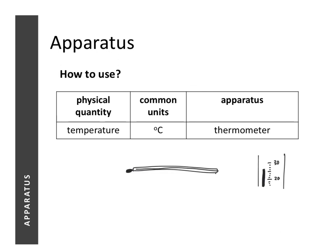To measure temperature, we use a thermometer. If you zoom into a section of the thermometer, the important thing to note is that each small division is 1 degree Celsius. If the temperature level is between two small divisions — for example, between 26 and 27 — we write it as 26.5. A thermometer allows you to measure to 1 decimal place, but that decimal place can only be 0 or 5, no other numbers.